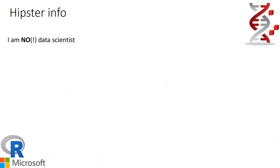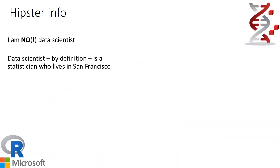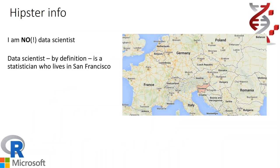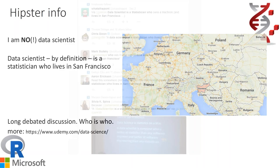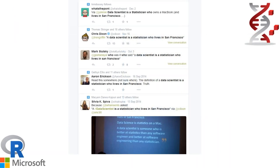But first of all, I am not a data scientist. It might be a bit of a surprise, but a data scientist by definition is a statistician who lives in San Francisco, and I come from Slovenia, so by definition I am not a data scientist. There was quite an interesting and long debate about who is who — the data scientist is also defined as a person who owns a MacBook and various other definitions from Twitter.